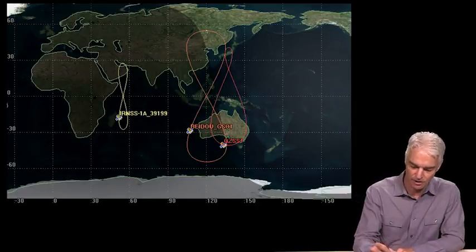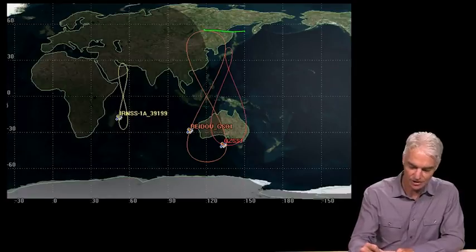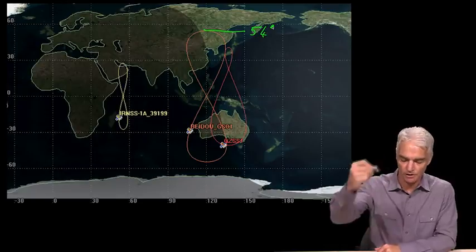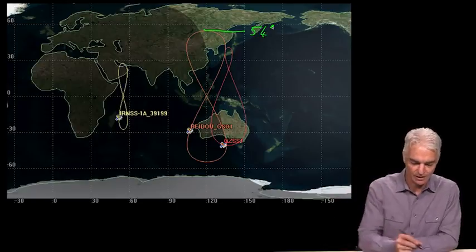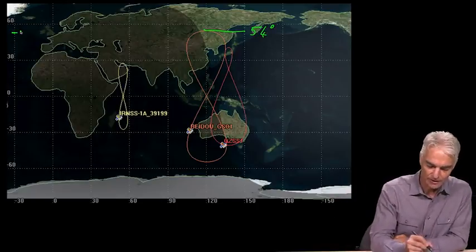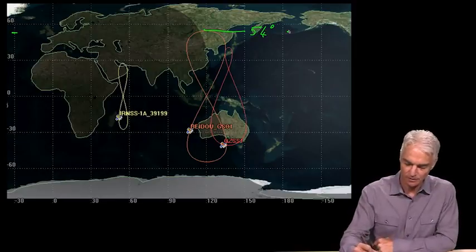And so this is a really interesting example of the effect of the inclination angle on the ground trace. So the one that goes highest in latitude is 54 degrees inclination angle and going overhead at 54 degrees latitude. You can see that here on the latitude scale for Beidou.